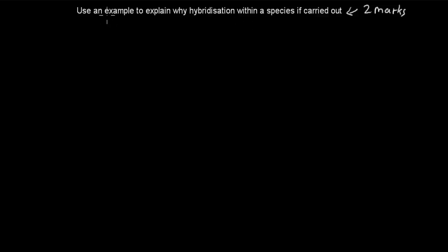So the question says: Use an example to explain why hybridization within a species is carried out. It's supposed to be 'is carried out.' And that's worth 2 marks. So when ready, pause the video and attempt the question.